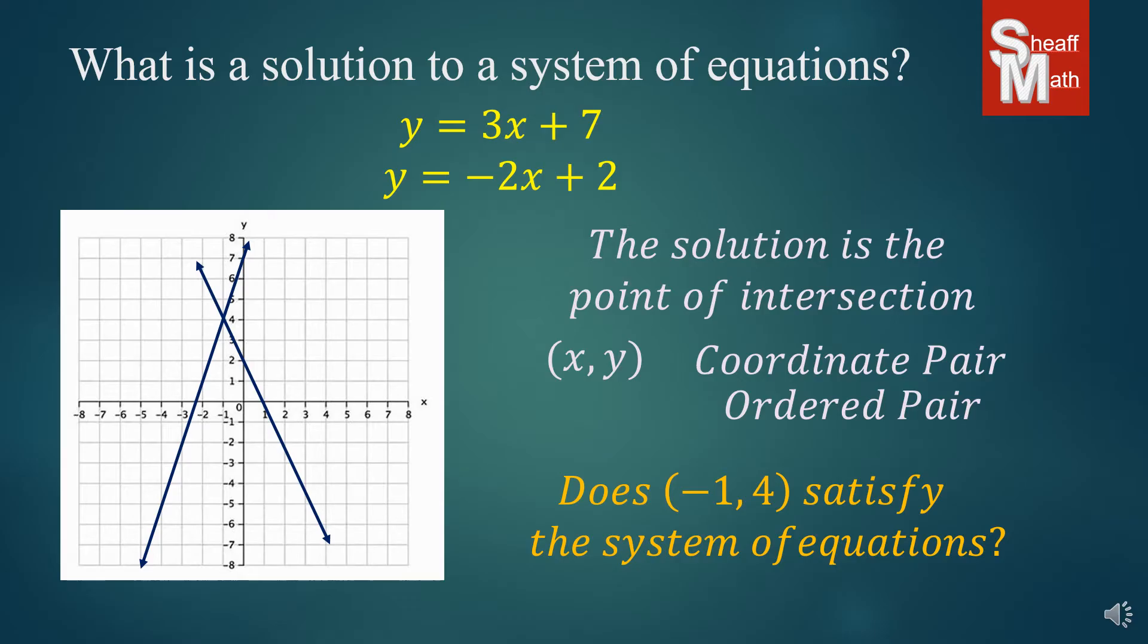In other words, is (-1, 4) a solution to the system? Is it the point of intersection? And so let's find (-1, 4). And there it is, right there where they intersect. And so this is the solution to the system. It does satisfy that system.